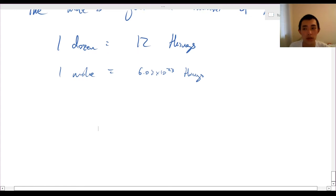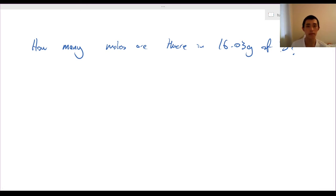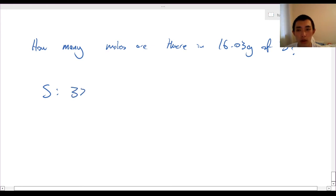But anyway, let's go on to some examples and derive some equations. So the first question I have for you is: how many moles are there in 16.03 grams of sulfur? So I'd like you to actually pause the video and have a go now. So I hope that you've had a go. Look at your periodic table. So you can see that on the periodic table, it says that sulfur has an atomic mass of 32.06 amu.